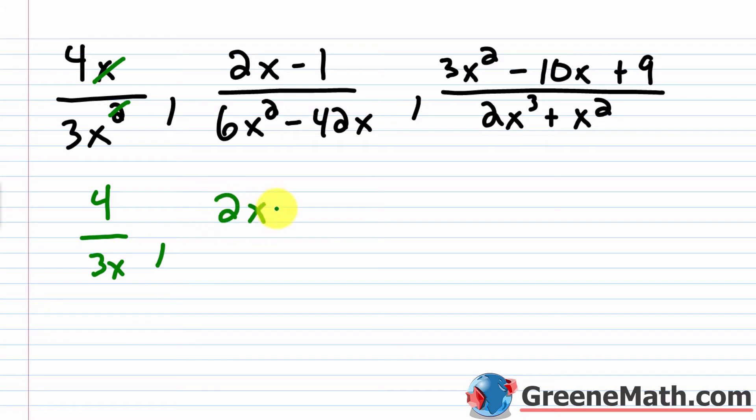This one I'm going to say is two x minus one over, if I pulled out a six x, because I have six x squared and I have 42 x, each of those I could pull out a six x from. So if I pull that out, inside what I'm going to have is x minus and then I would have seven, because six x times x would be six x squared, six x times negative seven would be negative 42 x.